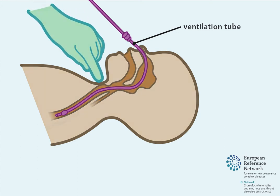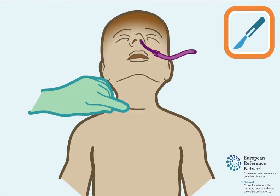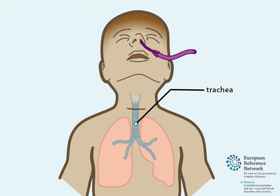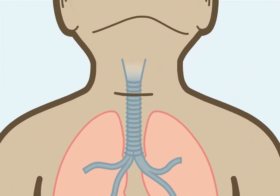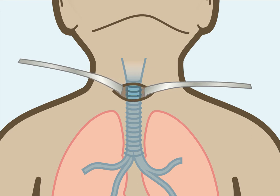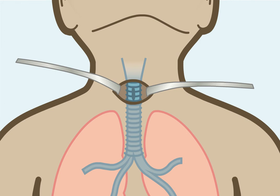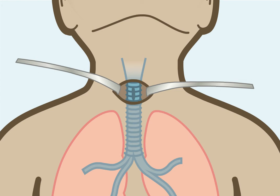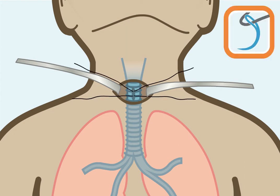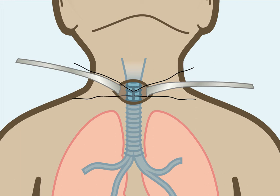Then, a small incision is made in the skin of the neck, so that the trachea — which is another word for windpipe — is exposed. An incision is made in the trachea below the level of the vocal cords, usually at the second and third tracheal rings. A stitch is placed at either side of the incision. These stitches are called stay sutures, and they help keep the surgically created hole open.